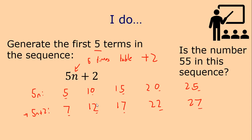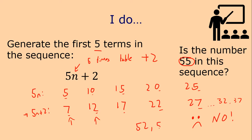So with that in mind, is the number 55 in this sequence? If I carried on going — 32, 37 — would I eventually get to 55? Hopefully you're saying no, you wouldn't. The number 55 can't be in this sequence because we're only ever going to end in a 7 or a 2. So 55 is out. We could see that 52 would be in the sequence and 57 would be in the sequence, but 55 wouldn't be.